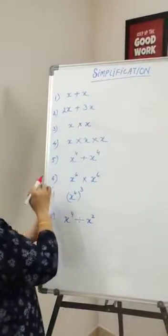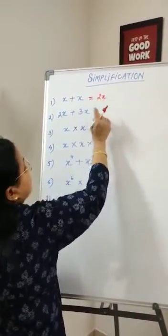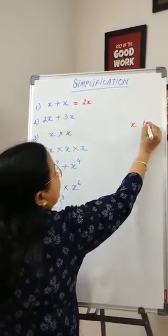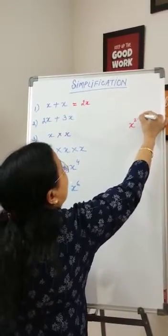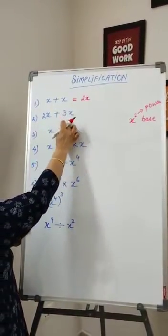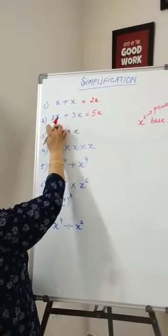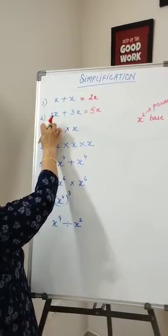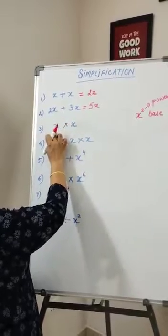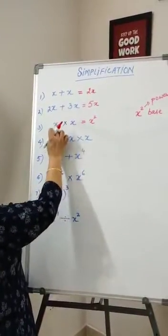x plus x — same base, so the answer is 2x. When the bases are the same in algebra, this is called the base and this is called the power. When 2x plus 3x, the answer is 5x.